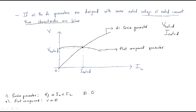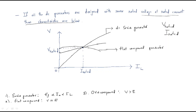Next, the over compound generator. As load increases, the terminal voltage becomes higher than the induced EMF. We name it the over compound generator. This is plotted as a straight line that increases.